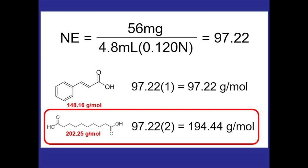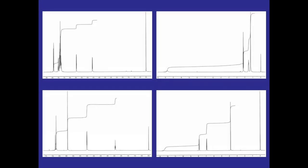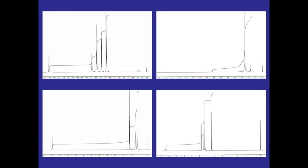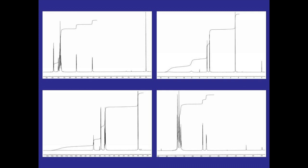Deciding between compounds depends on how well you feel you performed the titration versus how purely you isolated crystals for an accurate melting point. Once you have data for both the acid and the alcohol, make your best educated guess and write those in your conclusion with reasons why. The second part is to look at the NMRs provided in the procedure, find the ones matching your two compounds, draw the molecules, and label the peaks. Note that the NMRs were done with dry solvents, allowing coupling between alcohol OH groups and neighboring hydrogens, so you'll see splitting for alcohol peaks.